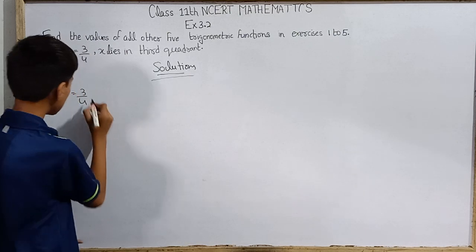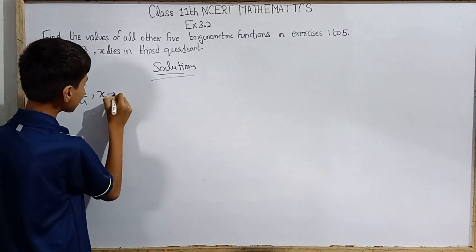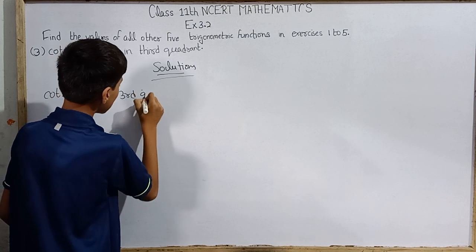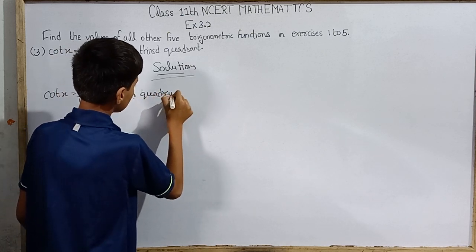The value of cot(x) is 3/4, and we're told which quadrant x is in. Again, third quadrant, as in the first question.